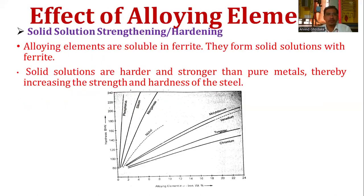Next is the effect of alloying elements on the properties of steel. The first effect is solid solution strengthening and hardening. Alloying elements that are soluble in ferrite form a solid solution with it. These solid solutions are harder and stronger than pure metals, thereby increasing the strength and hardness of the steel.